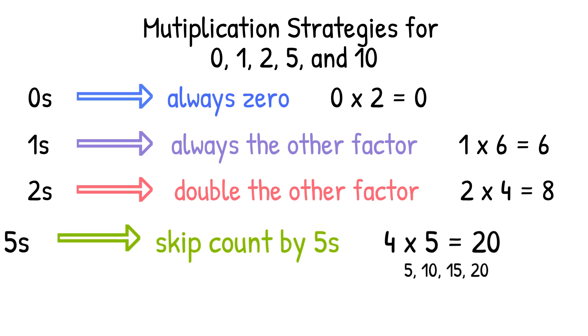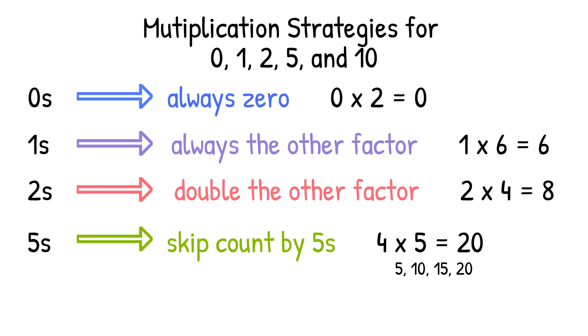When you multiply by 5, you just skip count by 5s. 4 times 5 equals 20: 5, 10, 15, 20. When you multiply by 10s, you can skip count by 10s. 10 times 3 equals 30.